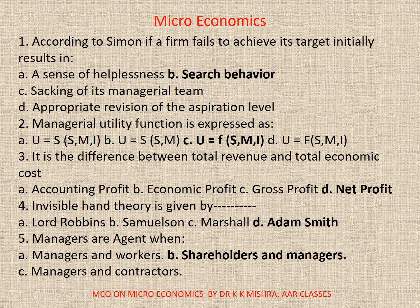Question 3. It is the difference between total revenue and total economic cost. A. Accounting profit. B. Economic profit. C. Gross profit. D. Net profit. So your correct option is D. Net profit.